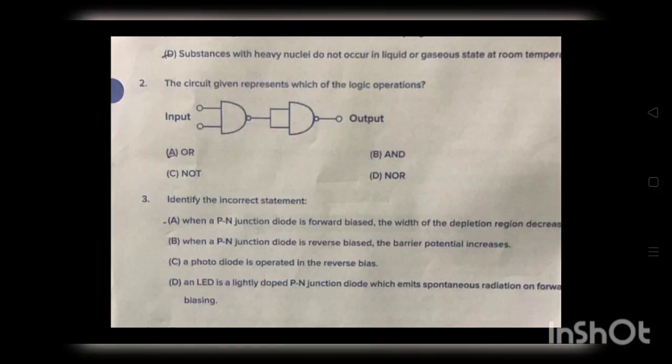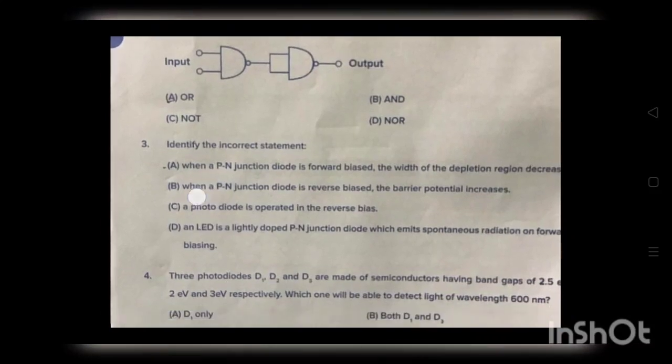Question number two: The circuit represents which of the logic operations. The correct answer is option D — this is the NOR gate.